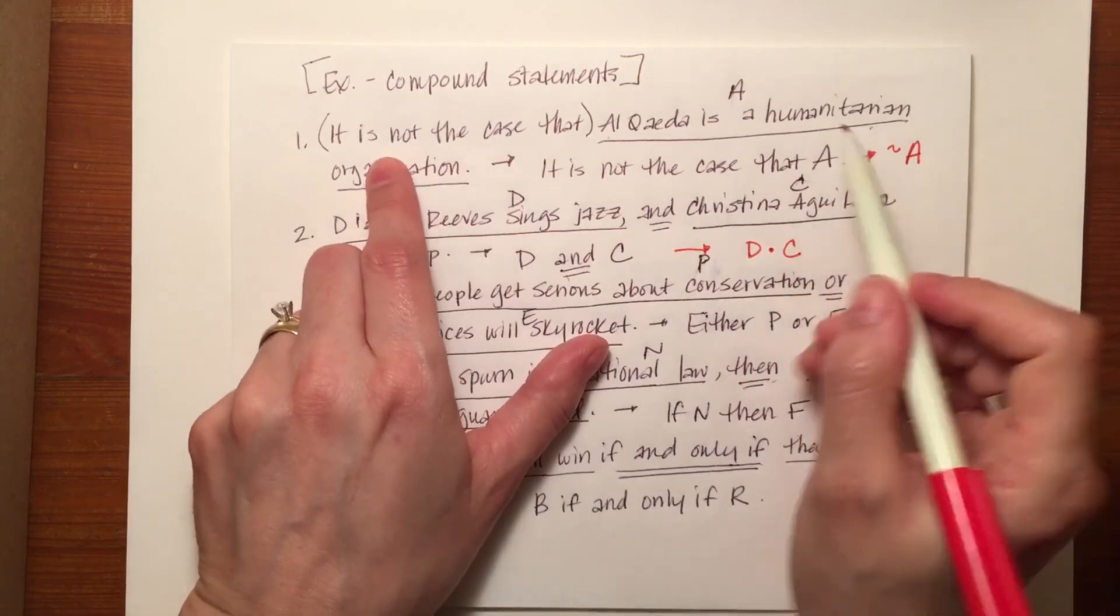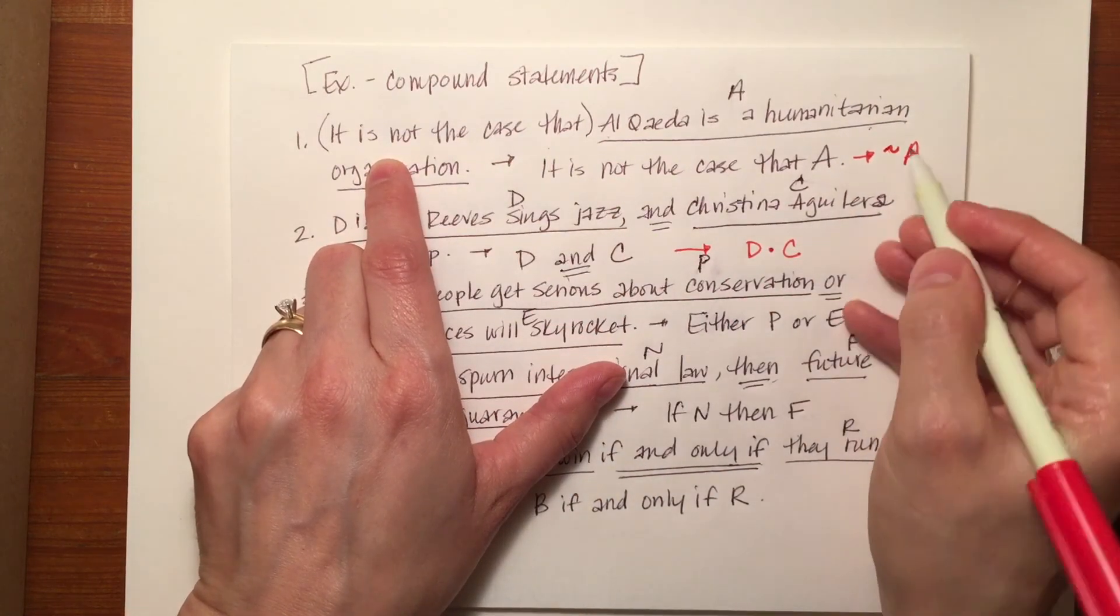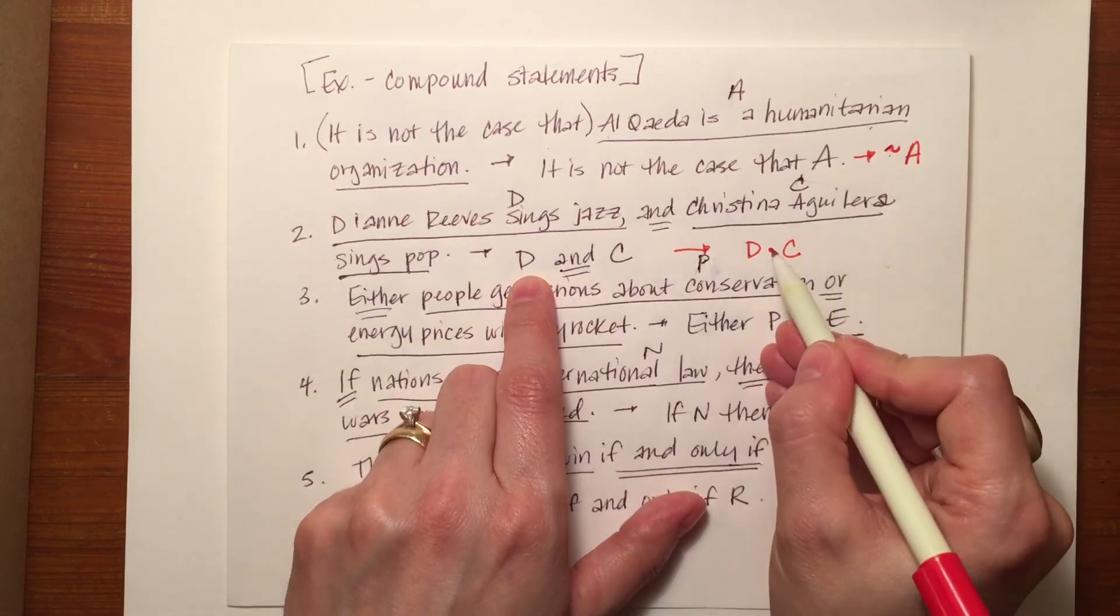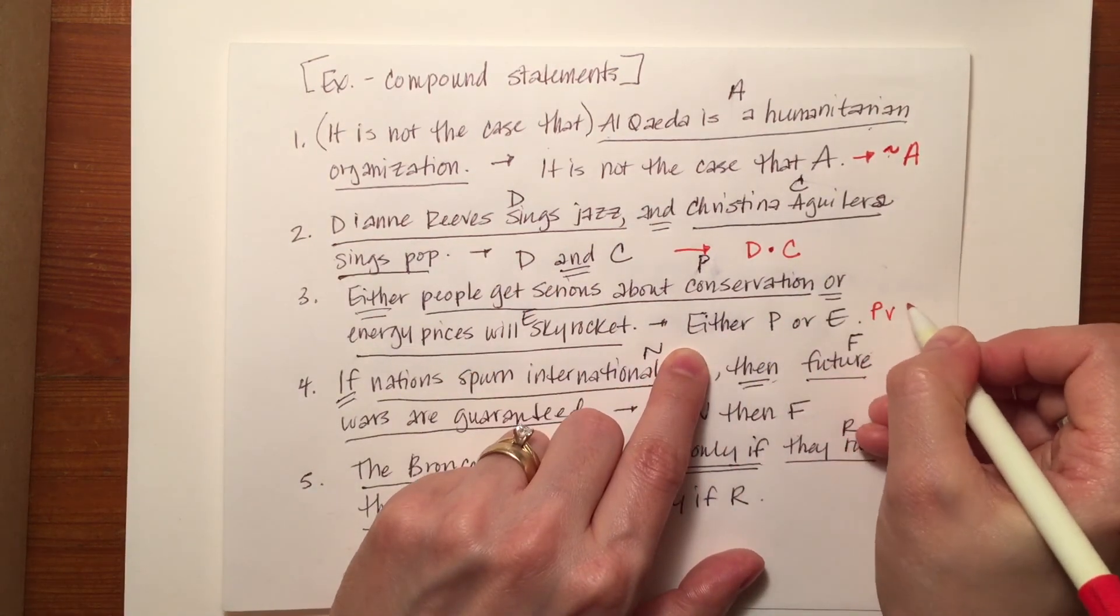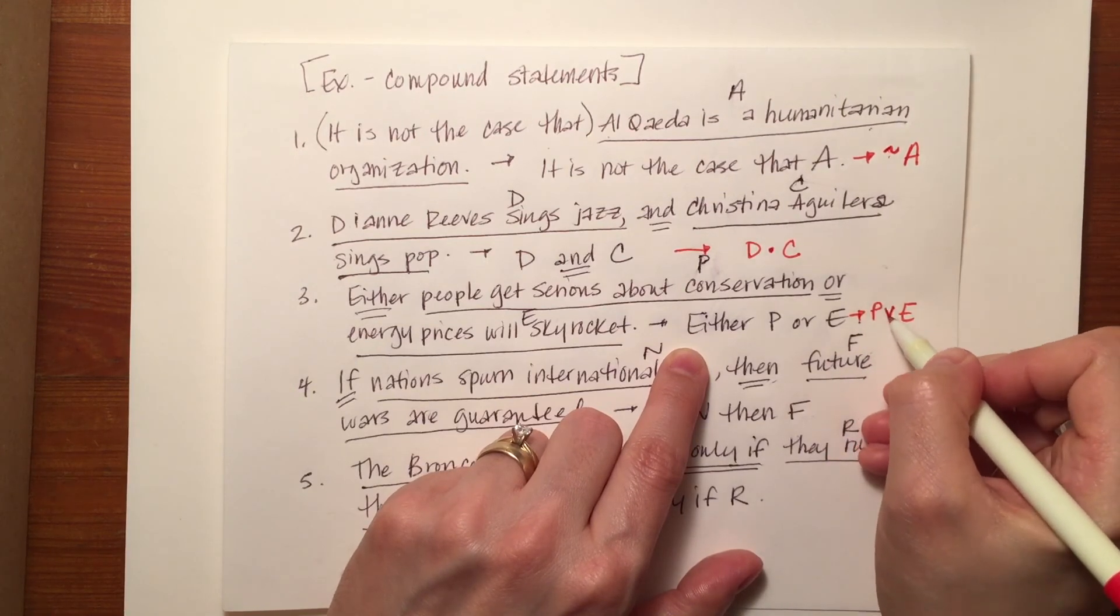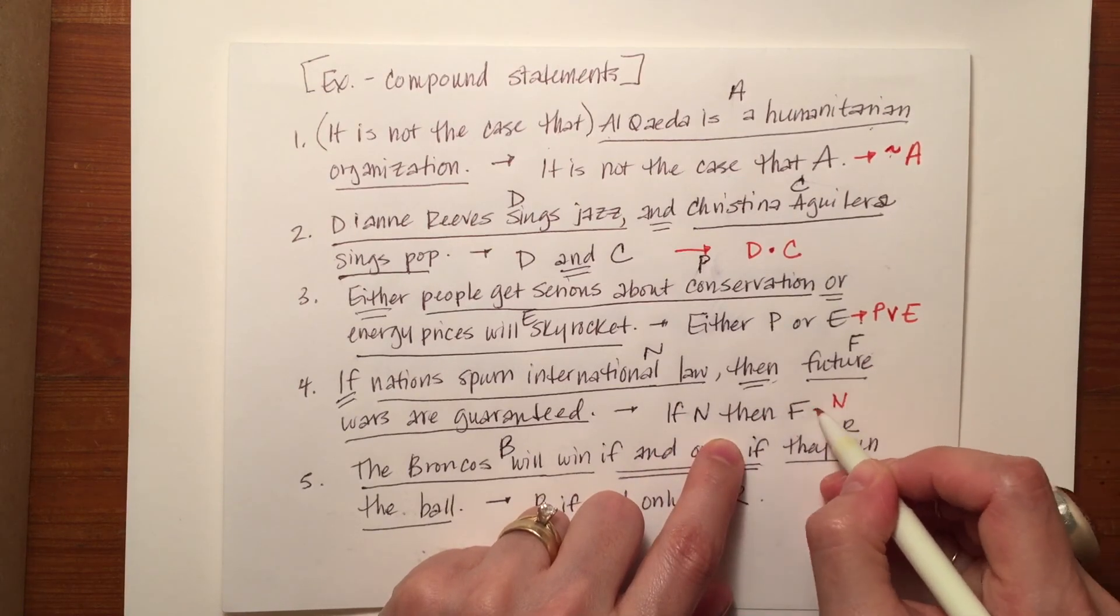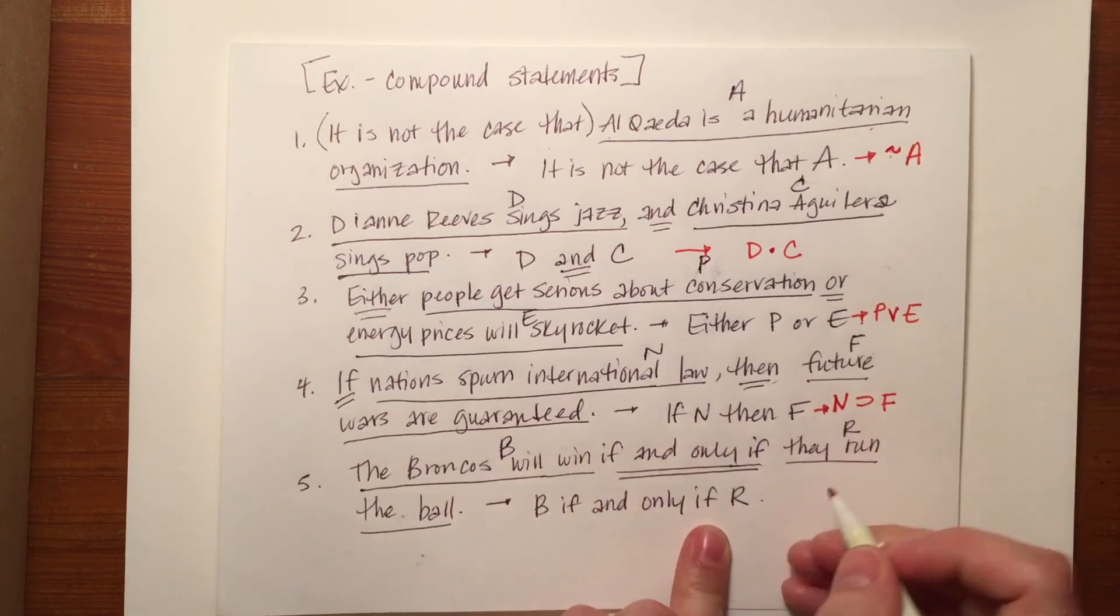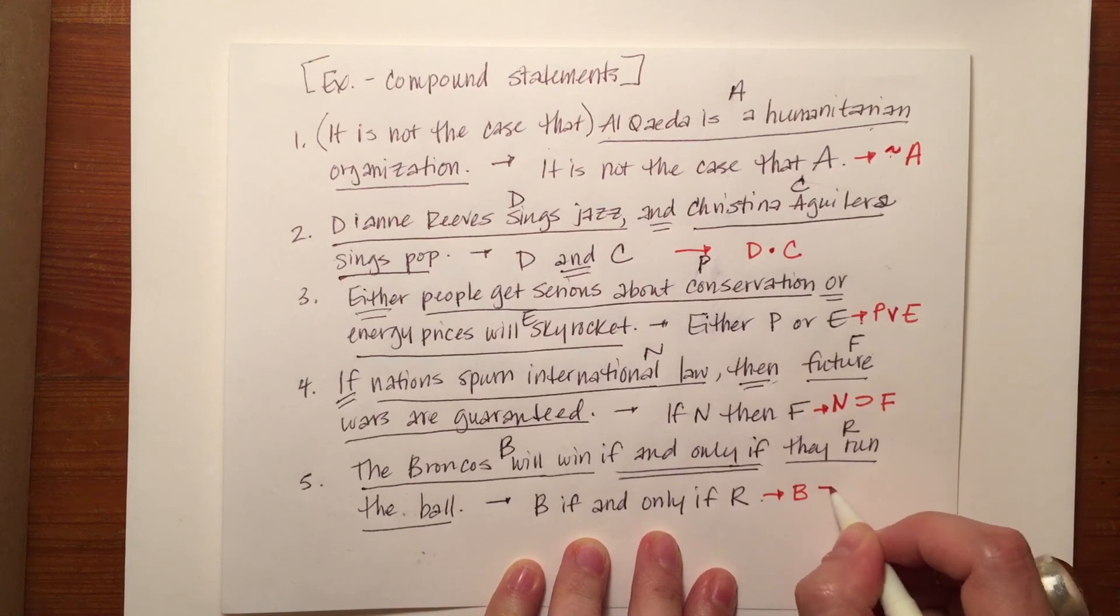The phrase 'it is not the case that' was translated by using the operator in its place and the 'and' becomes the dot. The 'either or' becomes the wedge making it P wedge E. 'If N then F' becomes N horseshoe F.